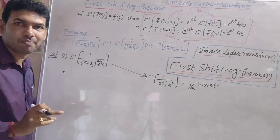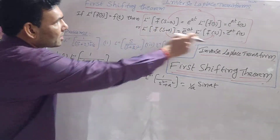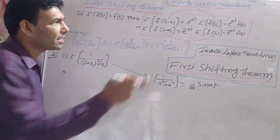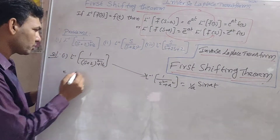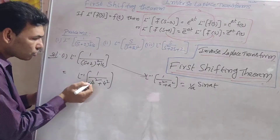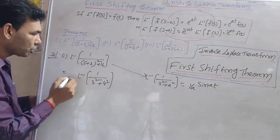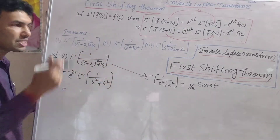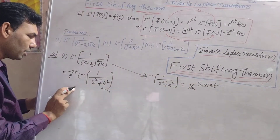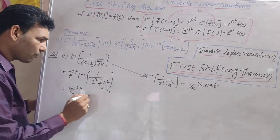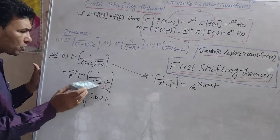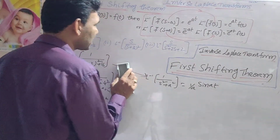What does the First Shifting Theorem of Inverse Laplace Transform say? If you want to replace s plus a by s, you can. But don't forget to write e^(minus at) in product. Here s plus 2 is replaced by s, and e^(minus 2t) is written in product. So the answer is e^(minus 2t) into (1/4) sin(4t).